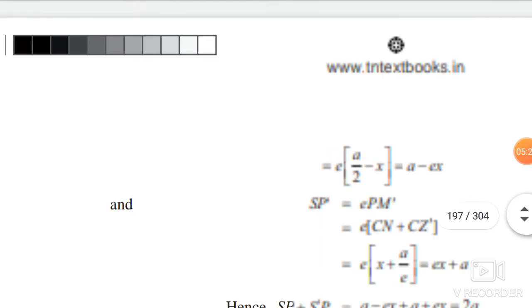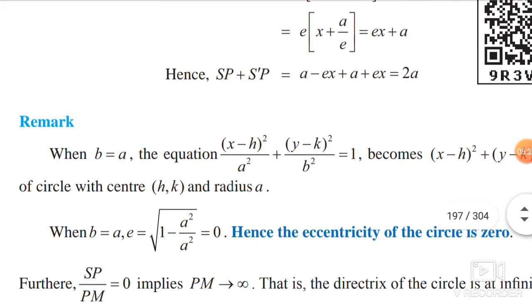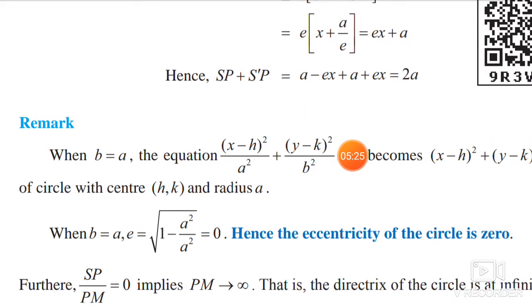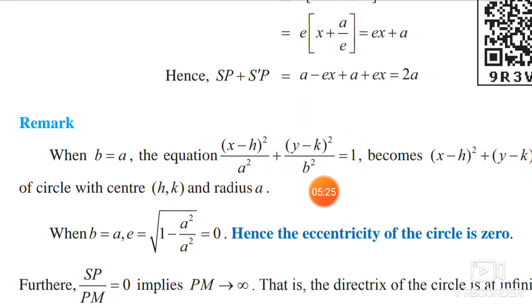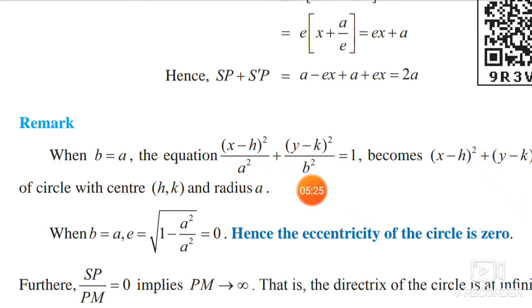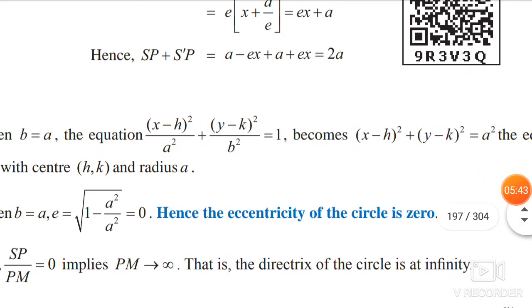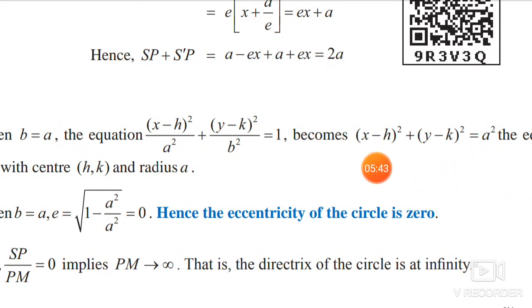Next, remarks and results. When the center is at (h, k), the ellipse formula gives the general equation. When we substitute b equal to a, the denominators are both a squared, so the equation becomes (x minus h) squared plus (y minus k) squared equals a squared, which is the equation of a circle with center (h, k) and radius a.